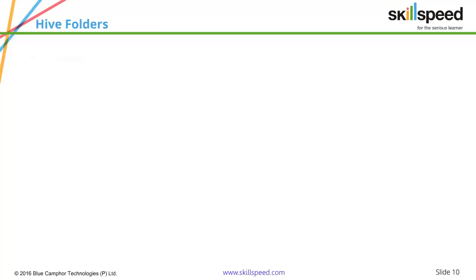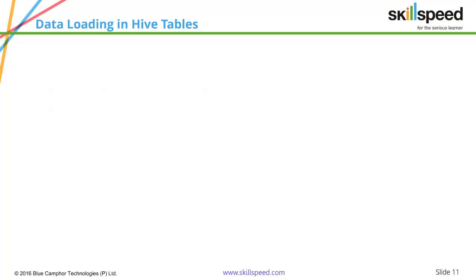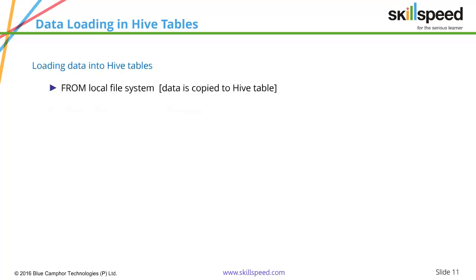By default, when you install Hive in Hadoop, it creates a folder called Hive under the user directory and then creates a folder called Warehouse under the Hive directory. This is where all your databases and tables will be created. Every database you create is a folder, and every table you create is also a folder within the database folder. When you want to load data into Hive, there are two techniques: either copy the data from the local file system, or point the Hive table to an existing folder on HDFS where your data is available.